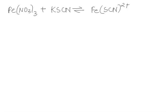Now we are also given the concentration of iron nitrate as 0.065 and the concentration of KSCN is also given as 0.065, and the equilibrium concentration of iron thiocyanate is given as 4.5 times 10 to the power minus 5.